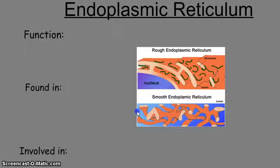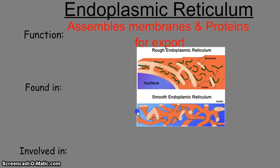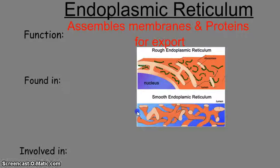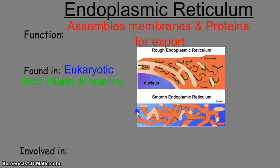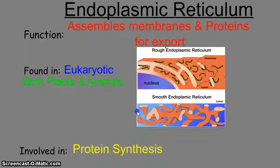The endoplasmic reticulum, also abbreviated ER, is usually right outside the nucleus, which allows genetic information easy access to the protein makers. Its job is to assemble proteins and make membranes so they can be exported to the correct places. It's found in eukaryotic cells only, in both plants and animals, and its main process is protein synthesis.